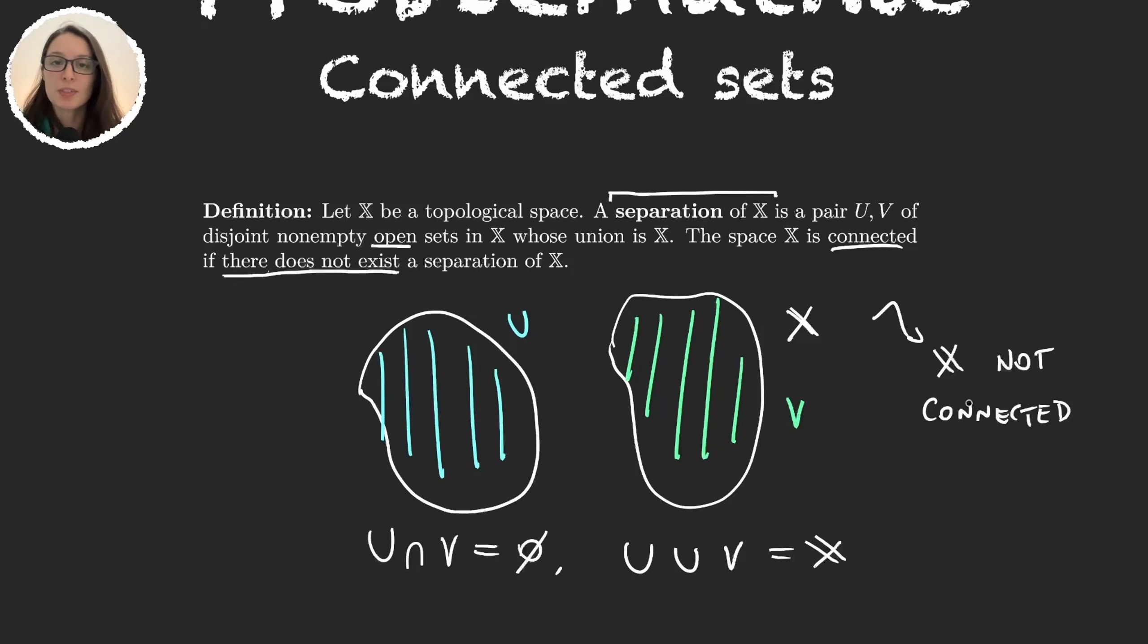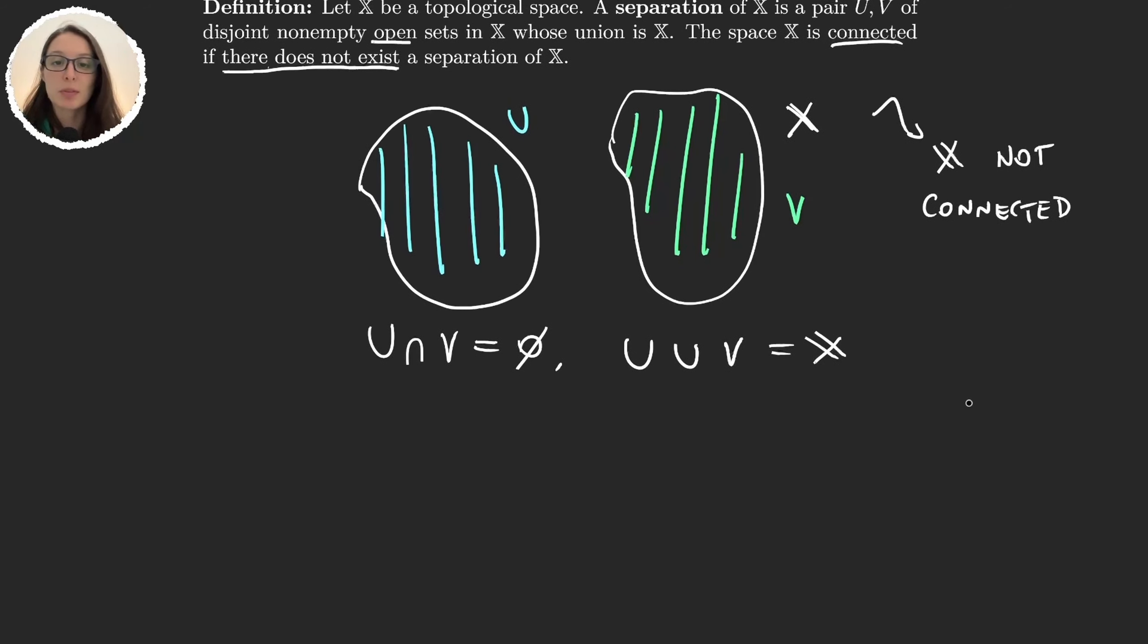There is also an additional definition that could be useful for some examples. We say that X is connected if and only if the only open sets in X are X and the empty set.